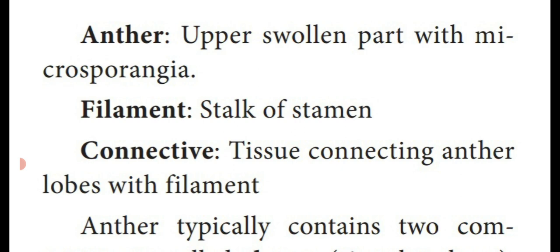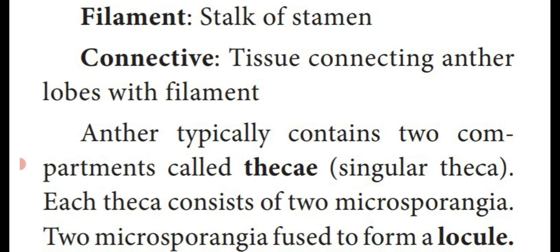First one: anther. At the uppermost part of a stamen is a swollen part — that means globose or oval shape — which contains sporangia. A sporangium present inside the anther lobe is known as microsporangia. Second one: filament — a small slender stalk or thread-like portion is known as filament, or stalk of a stamen. Next one: connective — a tissue which connects the filament and the anther lobe is known as connective tissue.